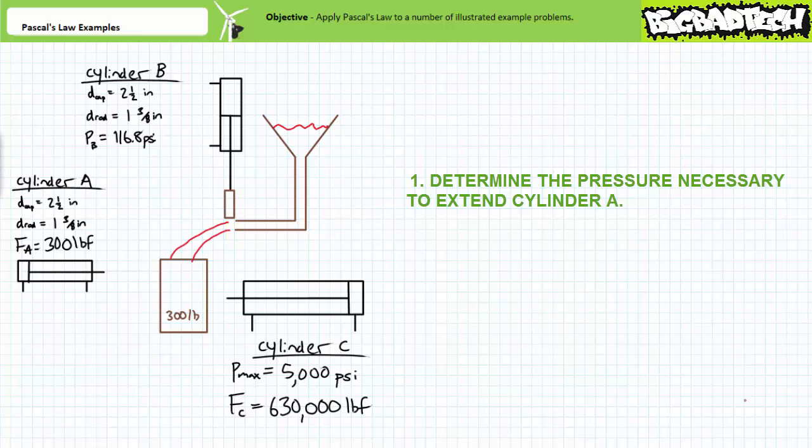Cylinder B pulls open a gate valve and a vat of molten aluminum that pours into the ceramic mold. While doing so, the pressure is observed to be 116.8 psi. Determine the retraction force exerted by cylinder B when it pulls open the heavy gate.